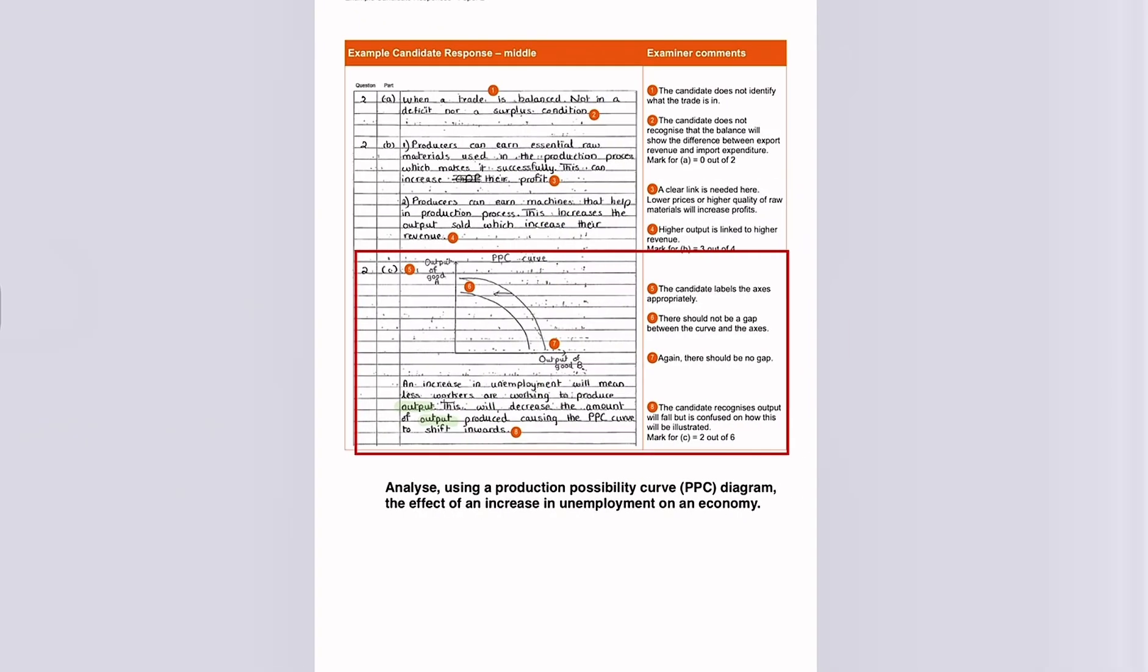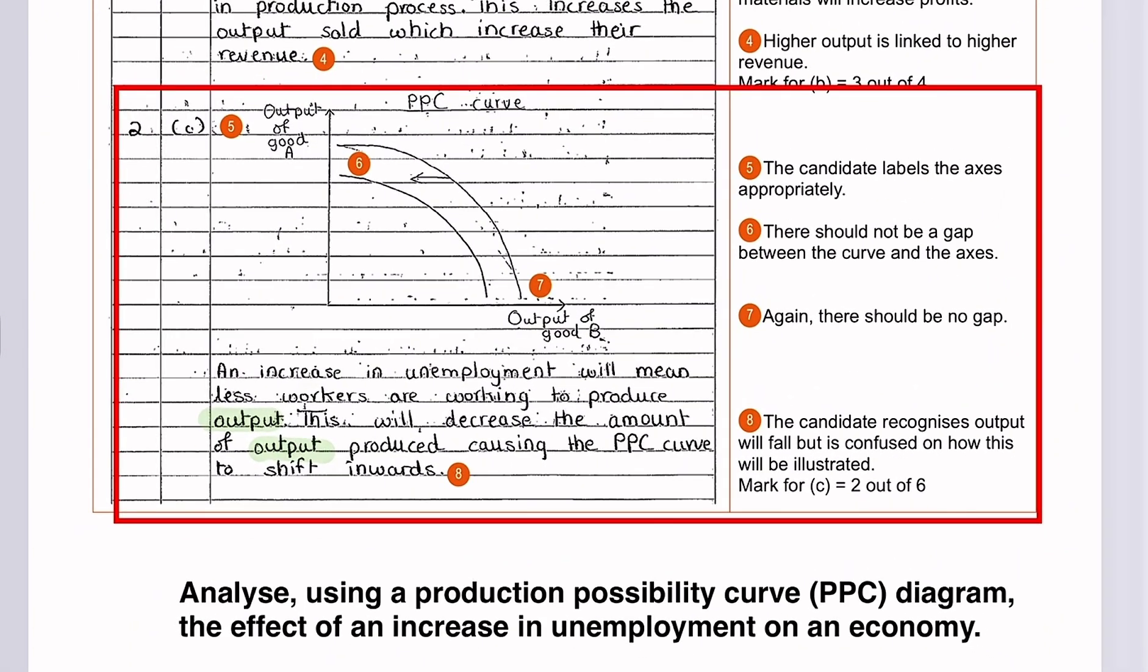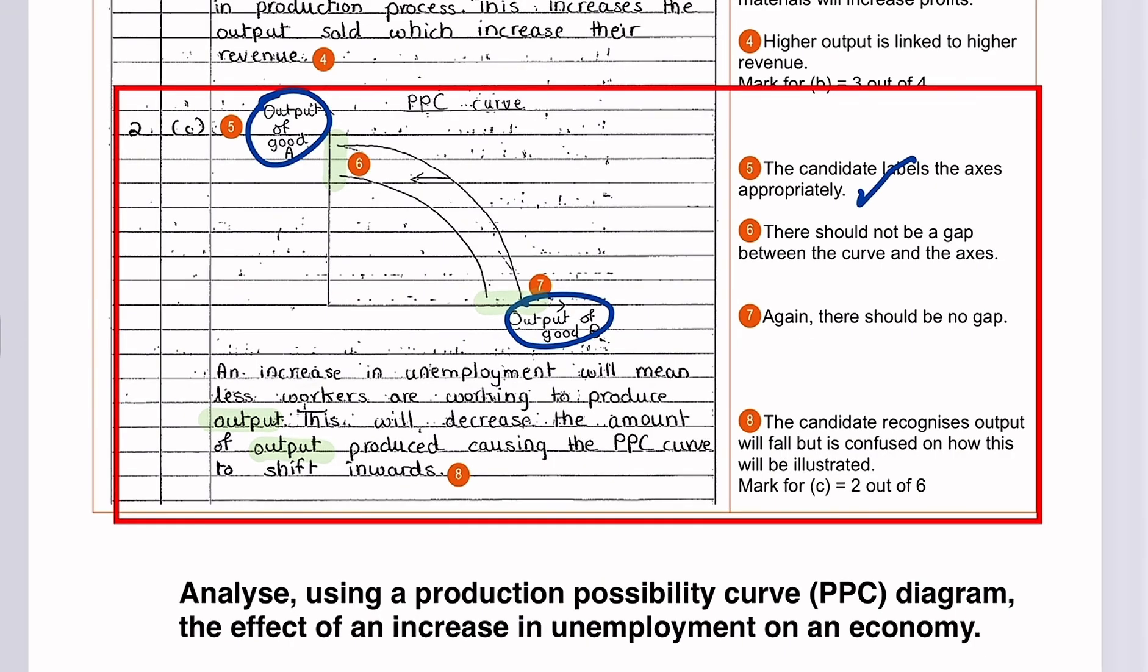So let's go on to some example candidate responses. Now the question is, analyze using a production possibility curve diagram, the effect of an increase in unemployment on an economy. Now firstly, the candidate was able to label the axes appropriately, here and here. And as there should not be a gap between the curve and the axes, here and here, the candidate did not get a mark for drawing the initial PPC curve. And they won't get the third mark for shifting the PPC curve.